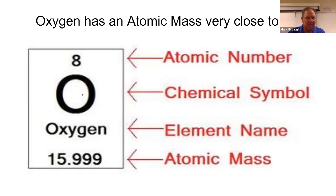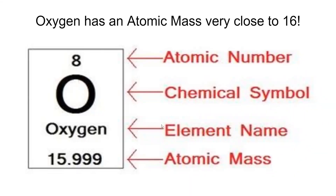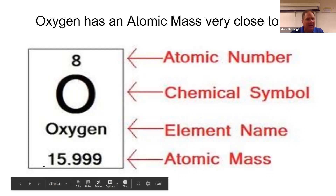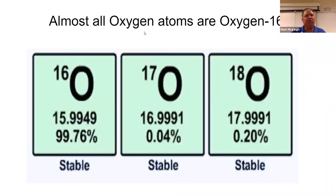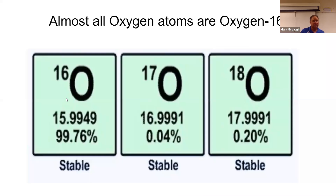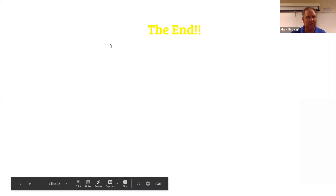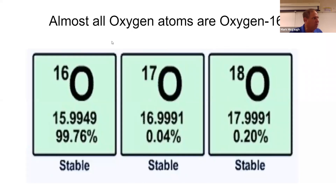Oxygen has eight protons; the chemical symbol is O. Notice the atomic mass is very close to 16 — almost all oxygen atoms are oxygen-16, with eight protons and eight neutrons. When you have an atomic mass very close to one whole number, it means one isotope is dominant.